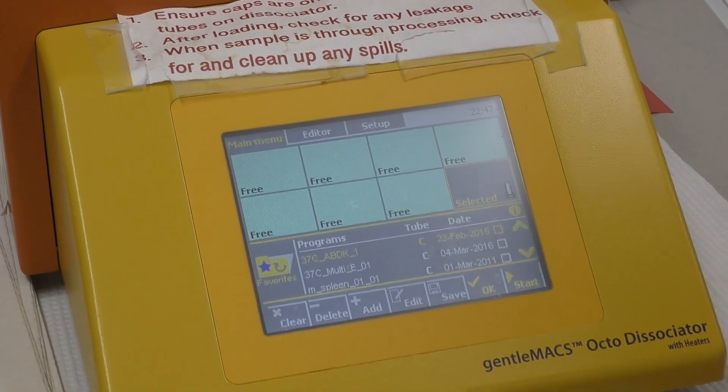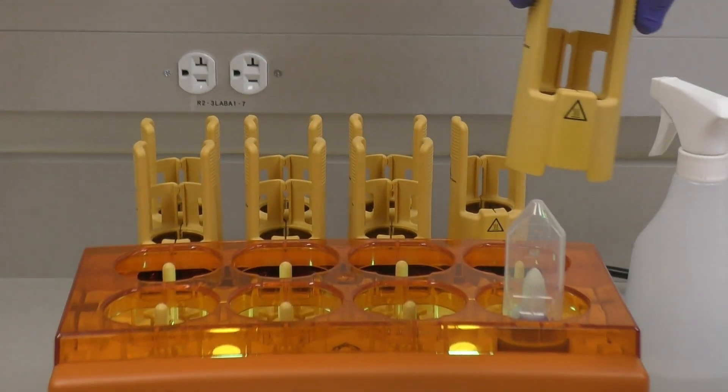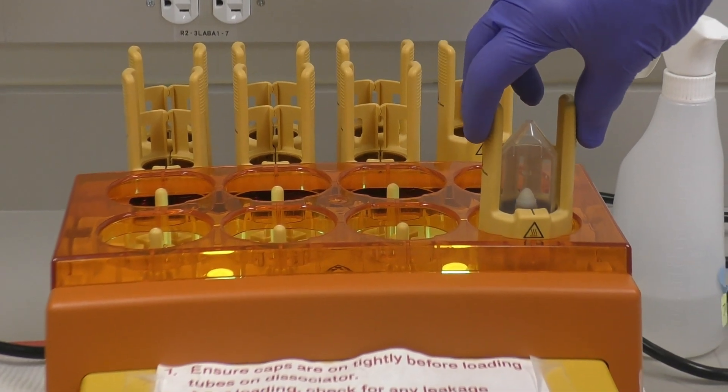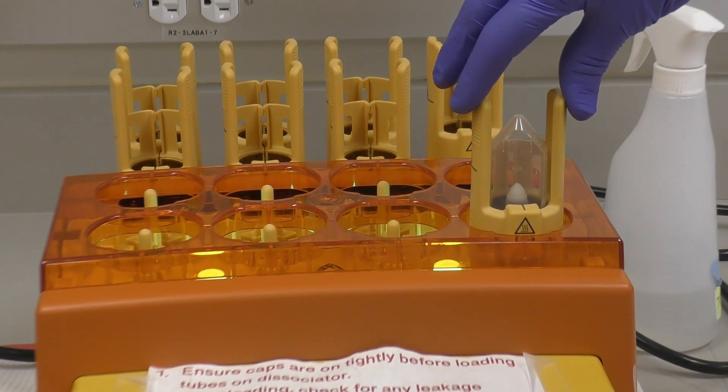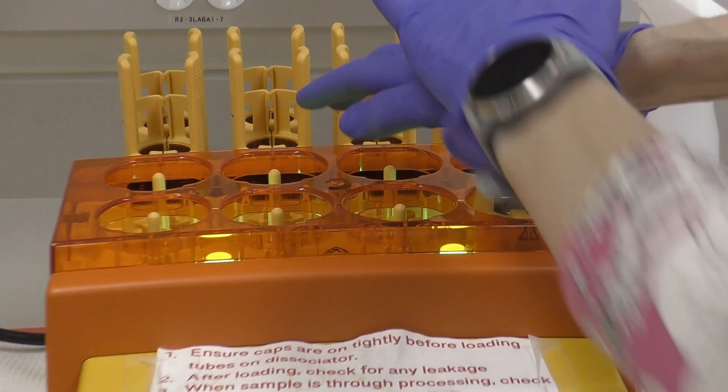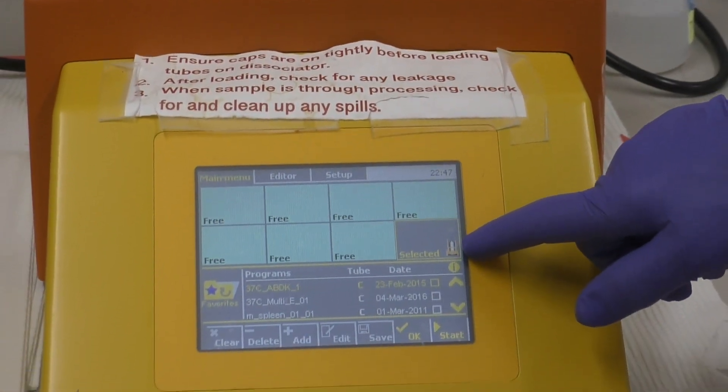After that, if a heater is needed, these are the heaters. Put the heater over the tube. The tube goes in first and then the heater. Push straight down until it clicks. The heater will be displayed on the screen.